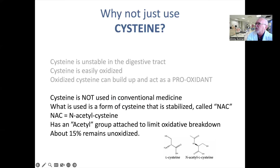Another proof of cysteine's inability to raise glutathione adequately is the fact that it is not used in conventional medicine to raise glutathione. In the 1960s, an altered form of cysteine was developed that could withstand oxidation. Biochemists added an acetyl side chain, which offered protection to the molecule, thus called NAC or N-acetylcysteine. NAC can resist oxidation about 15% of the time, which means that 85% is oxidized — which is why NAC has potential side effects that can be annoying. Also, long-term use is limited because of this problem.